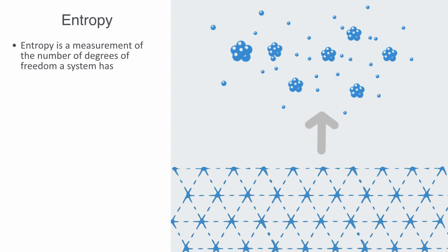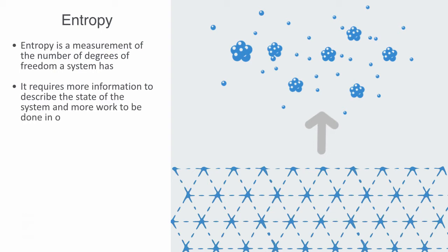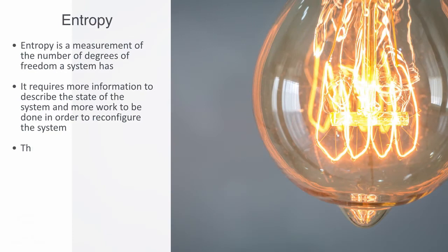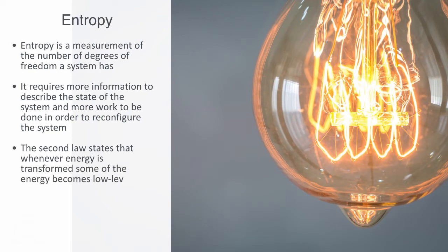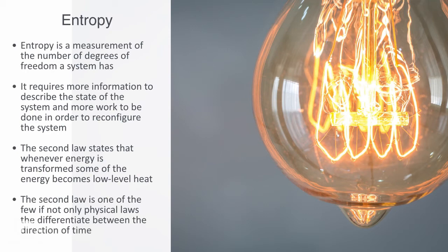When the entropy goes up, it requires more information to describe the state of the system, and it would require more work to be done in order to reconfigure the system into its original ordered state. As such, entropy is a key measurement in information theory, where it quantifies the uncertainty involved in predicting the value of a random variable. The second law states that whenever energy is converted from one form to another, some of the energy becomes low-level heat, meaning that the conversion of energy is never 100% efficient. Some energy is lost as heat, and it is no longer high-level energy that can be used for work, such as moving things or fueling metabolic processes in plants and animals. Thus, the second law is one of the few, if not only, physical laws that differentiates between the directions of time.